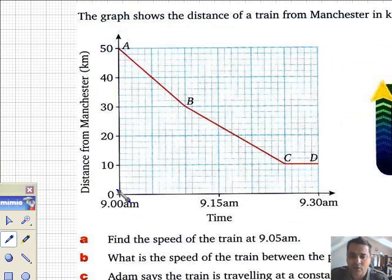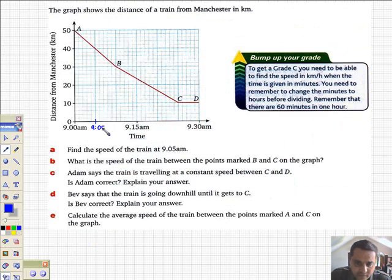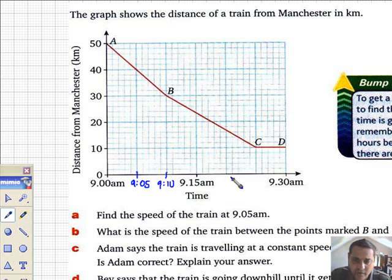It says, find the speed of the train at 9.05. Well, look at it carefully. That's 9.05. Going up in five-minute blocks, so it's quite a friendly graph. You may as well fill in the rest. We may or may not need it. So it's a half an hour journey, it would seem.